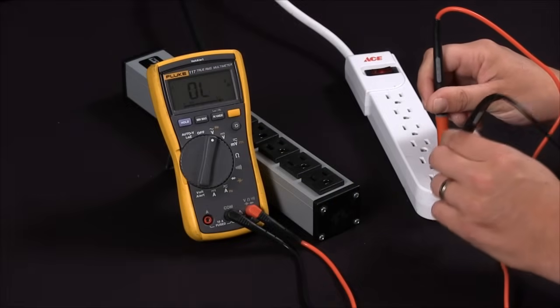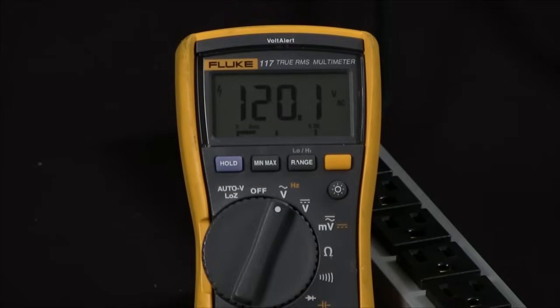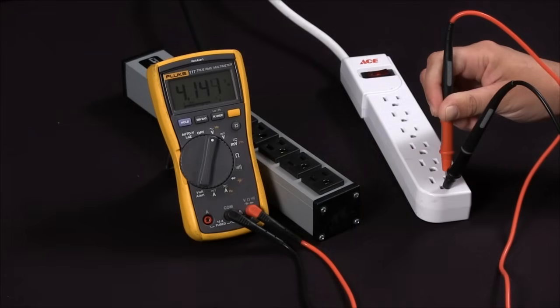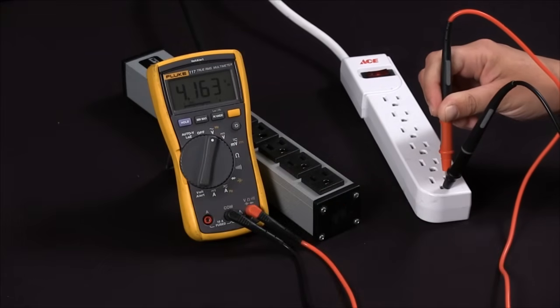Now if I remove that ground over to the neutral side I'm getting 120 volts. If I go back to my ground to hot I'm at 4 volts. This is very confusing. Is this a true voltage or not?